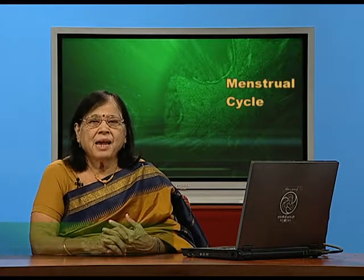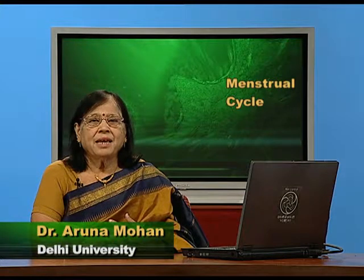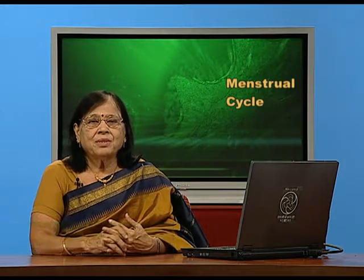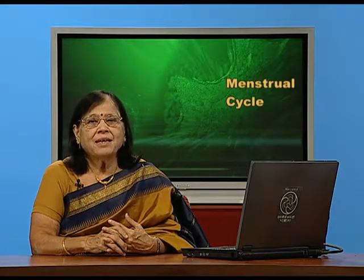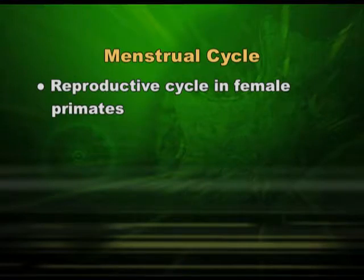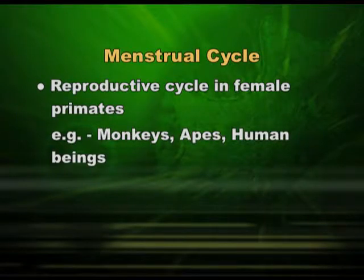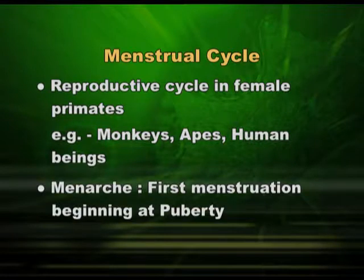Dear students, I am Dr. Aruna Mohan from Delhi University, and today I am discussing with you certain aspects of the menstrual cycle. You all know that the menstrual cycle is a reproductive cycle primarily found in primates like monkeys, apes, and also human females. Menarche is a word I would like you to be familiar with — menarche is the first bleeding or first menstrual cycle in a human female, i.e., the initiation of menstruation.